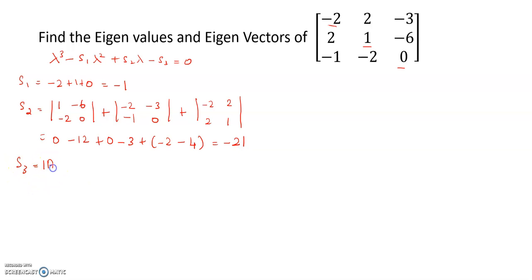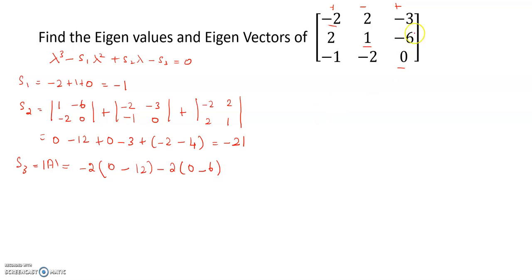S3 is the determinant of the given matrix. Expanding along the first row with plus, minus, plus signs: minus 2 into (0 minus 12) gives 24, then minus (minus 2 into (0 minus 6)) gives 12, then minus 3 into (minus 4 minus minus 1) gives plus 9. So S3 equals 45.